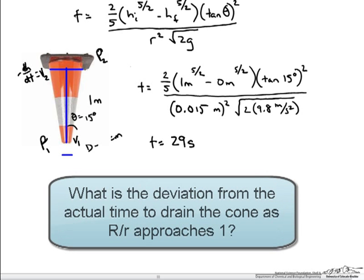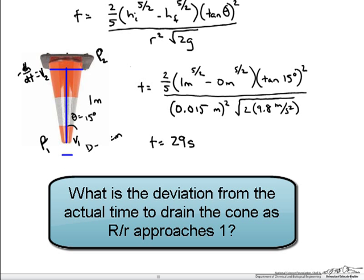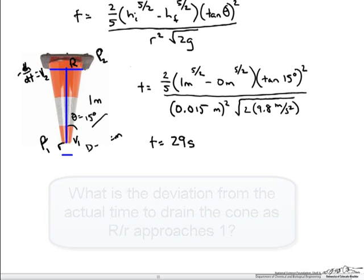Now an interesting follow up to this work would be to see at what ratio of big R of the conical tank to little r this equation would hold. And in what range of theta. You can imagine as theta becomes 0 the velocity of point 1 is just going to approach the velocity of point 2. And we would have something that looked like pipe flow. In this case we would have to find a new relationship using the Bernoulli equation.